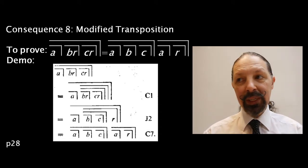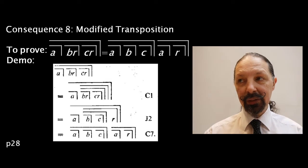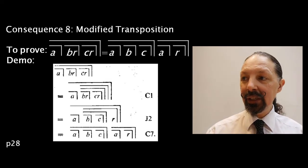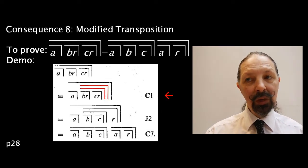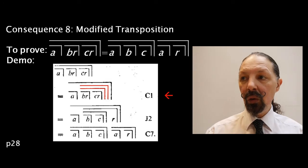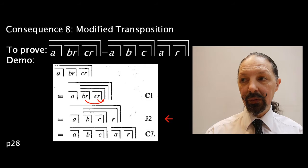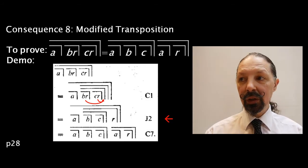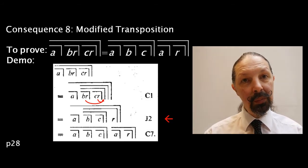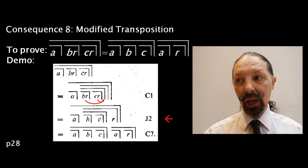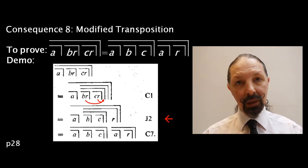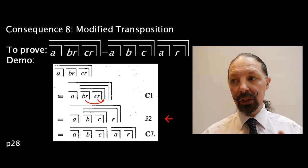First of all we take the left hand part of the equation and apply C1. We then take J2, our old friend, P mark over 2, Q R mark over 2 mark over 2, and we render it P mark, Q mark, mark over 2 R.